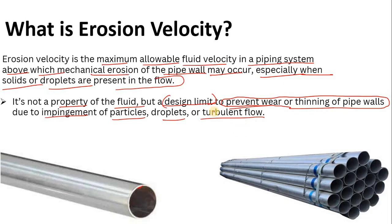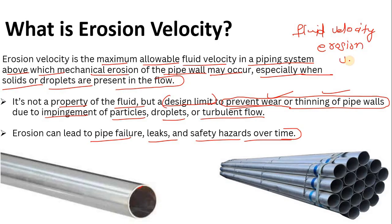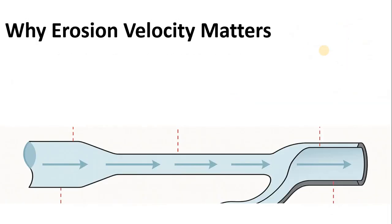It is not a property but a design limit. If your fluid velocity goes beyond it, wear and thinning of pipe walls can occur, leading to erosion, pipe failure, leaks, and safety hazards over time. That's why whenever you do line sizing, you must check that your fluid velocity is less than your erosional velocity.